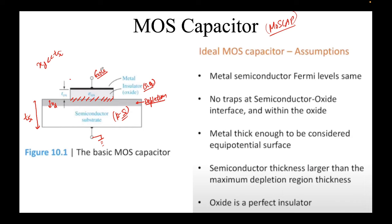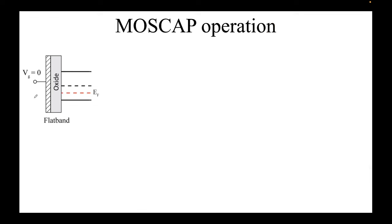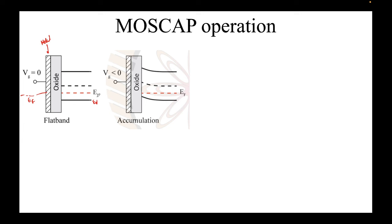In the flat band condition, the bands in the semiconductor are flat — no gate bias applied, so the Fermi level is constant throughout. When you apply a negative bias to a p-type substrate, the valence band is closer to the Fermi level, and holes (majority carriers) are attracted to the interface. At the interface, E_v is closer to E_f, meaning the hole concentration increases at the surface.